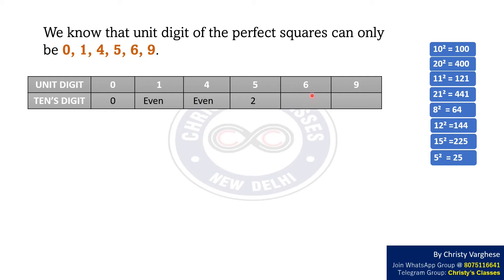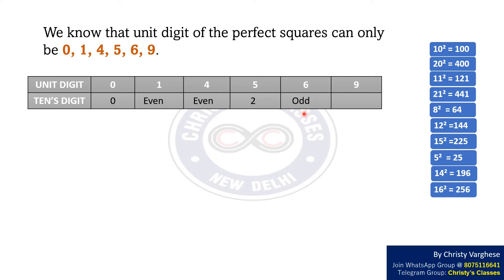Now, consider the case when the unit digit is 6. Consider 14² = 196 and 16² = 256. In both these cases, the unit digit is 6, and the tenth digits are 9 and 5. Which means that the tenth digit is odd.